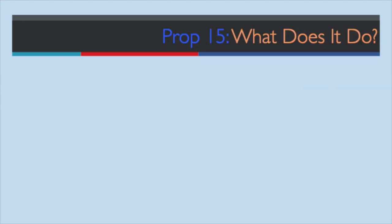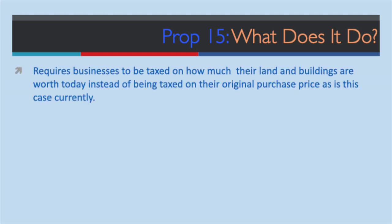What does Prop 15 do? Three things. First, it requires businesses to be taxed on how much their land and buildings are worth today, instead of their original purchase price as is currently the case. This change will be put in place over time starting in 2022, but does not start before 2025 for properties used by California businesses that meet certain rules and have 50 or fewer employees.